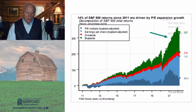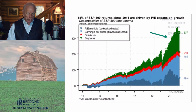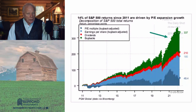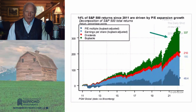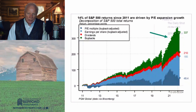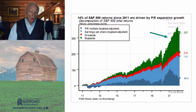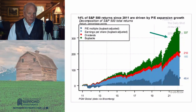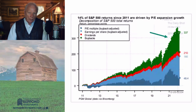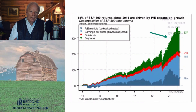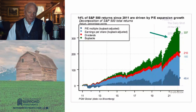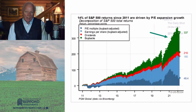This chart shows that since 2011, 14% of S&P 500 returns are driven by price-to-earnings ratio expansion — the degree to which prices have gone beyond the earnings that support those prices. Stocks have way overshot the earnings that support them, and the previous chart shows they've also way overshot the underlying economy.